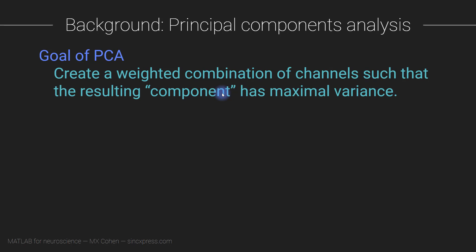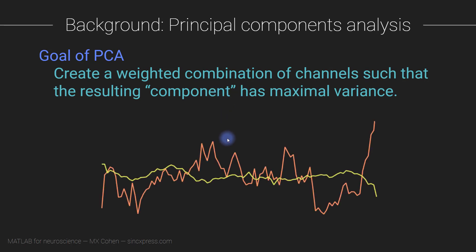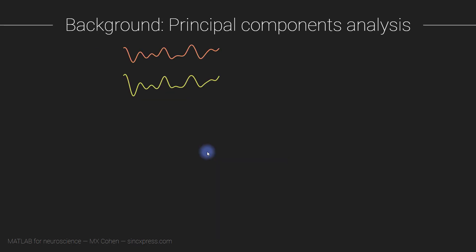Let me take a moment to explain the conceptual idea of PCA. Here you see two time series: a signal in yellow with low variance and an orange signal with relatively higher variance. The goal of PCA is to figure out the optimal combination of neurons that maximizes the variance in the weighted average of cell time series. Here we see two time series that are really strongly correlated, so we can simply weight them equally and the average already has a pretty high variance.